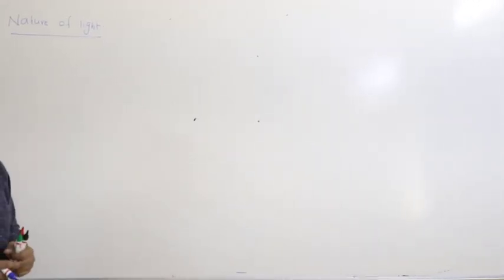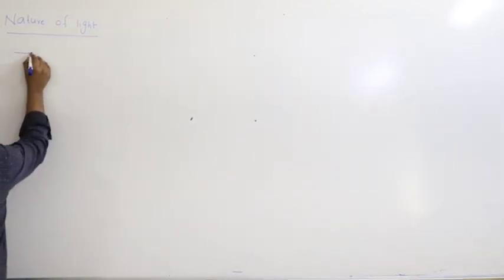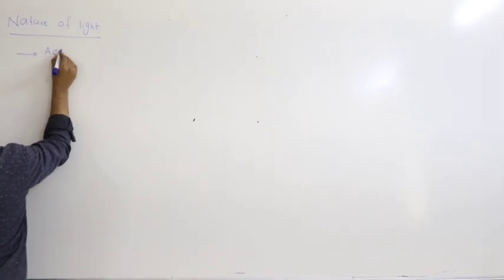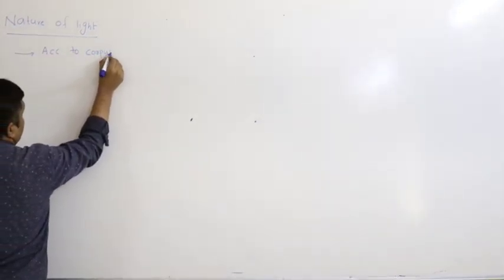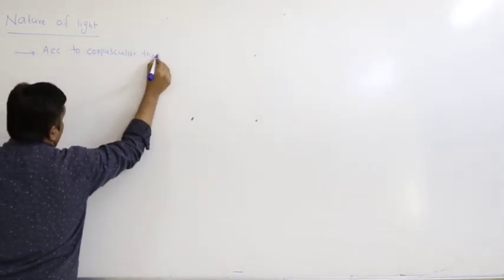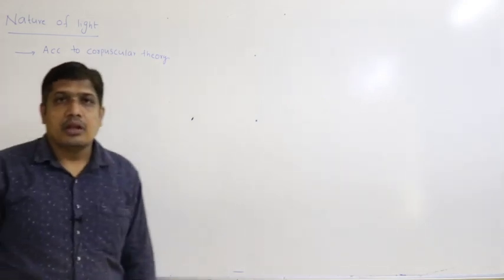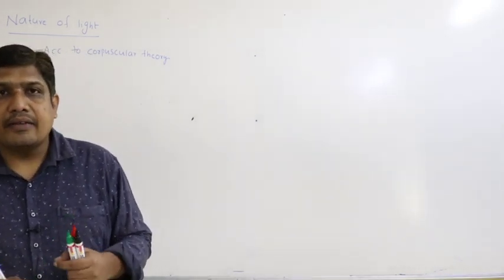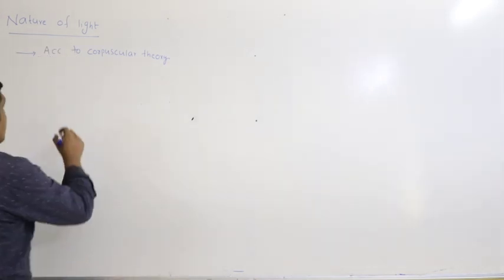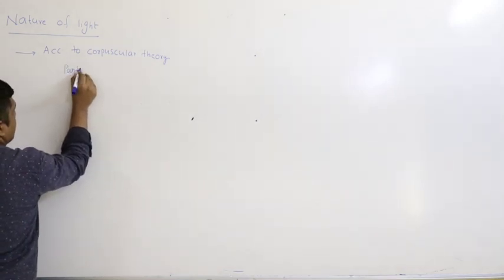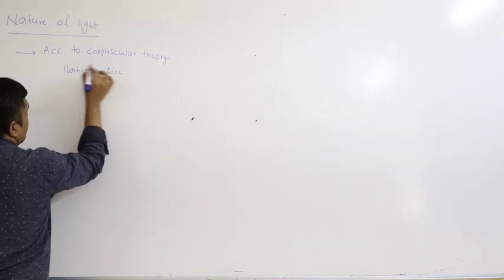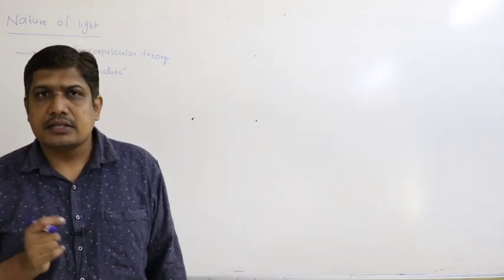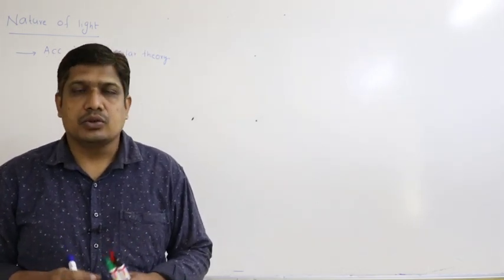Starting with the nature of light, let us study a few theories which try to explain it. According to corpuscular theory, light has particle nature — light travels in the form of a particle. The particle nature was able to explain some properties of light but not all properties. That was its drawback.